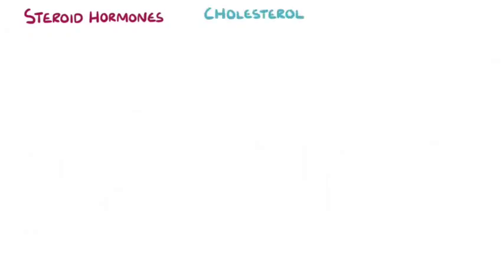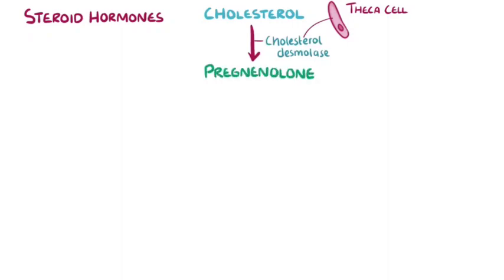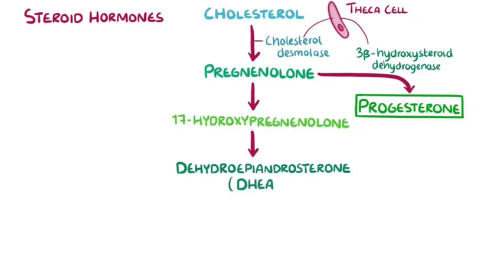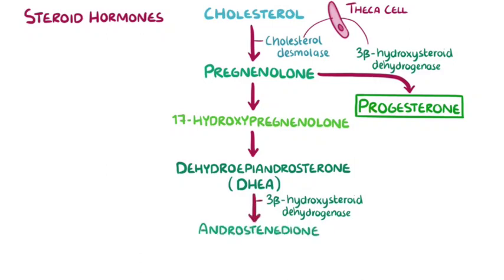Both estrogen and progesterone are steroid hormones, so their production starts with cholesterol. Cholesterol reaches the theca cells, and inside there's an enzyme called cholesterol desmolase, which converts cholesterol to pregnenolone. Another enzyme in theca cells, called 3-beta-hydroxysteroid dehydrogenase, converts some of the pregnenolone into progesterone. However, most of the pregnenolone is converted into 17-hydroxypregnenolone, and then into dehydroepiandrosterone, or DHEA. 3-beta-hydroxysteroid dehydrogenase also acts on DHEA and converts it into androstenedione, a testosterone precursor.